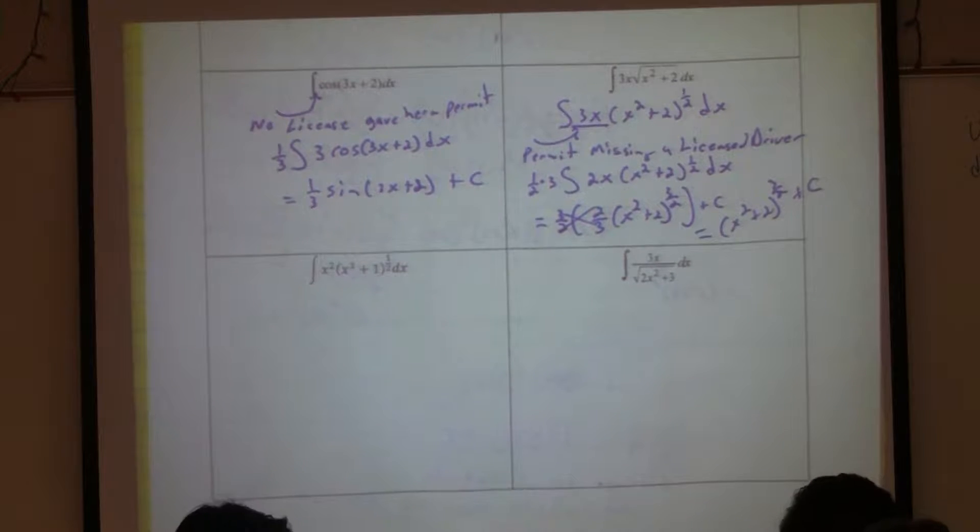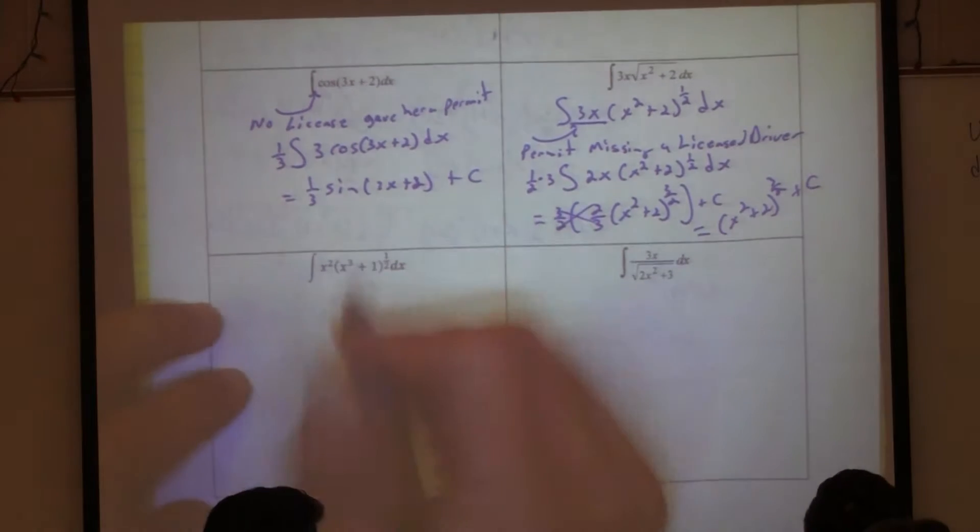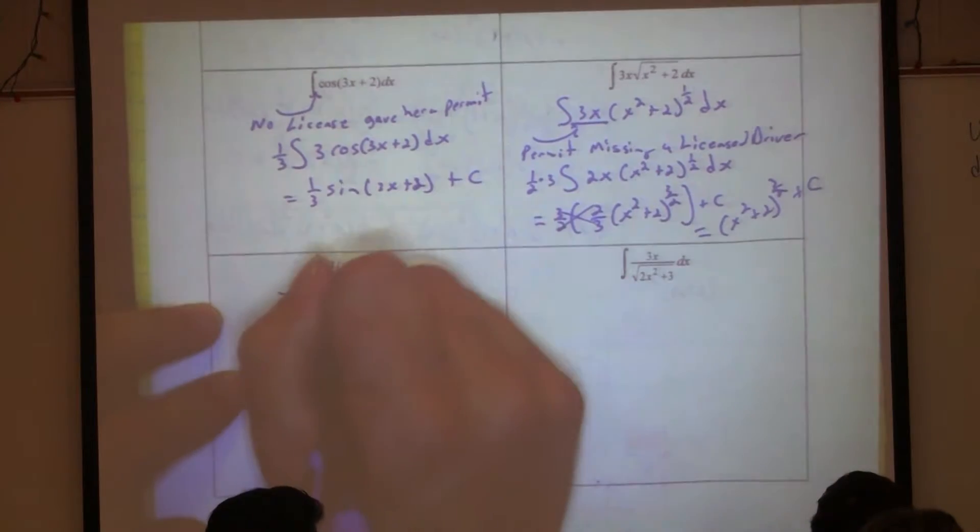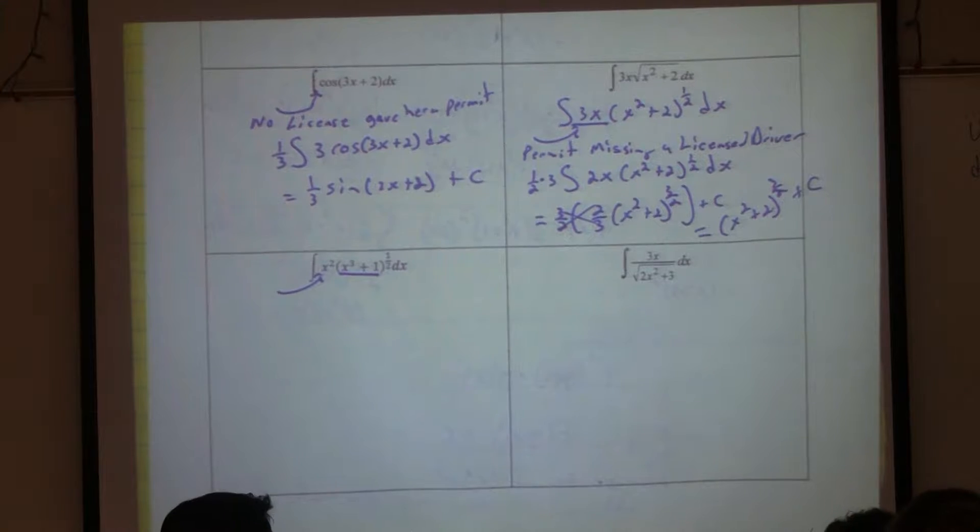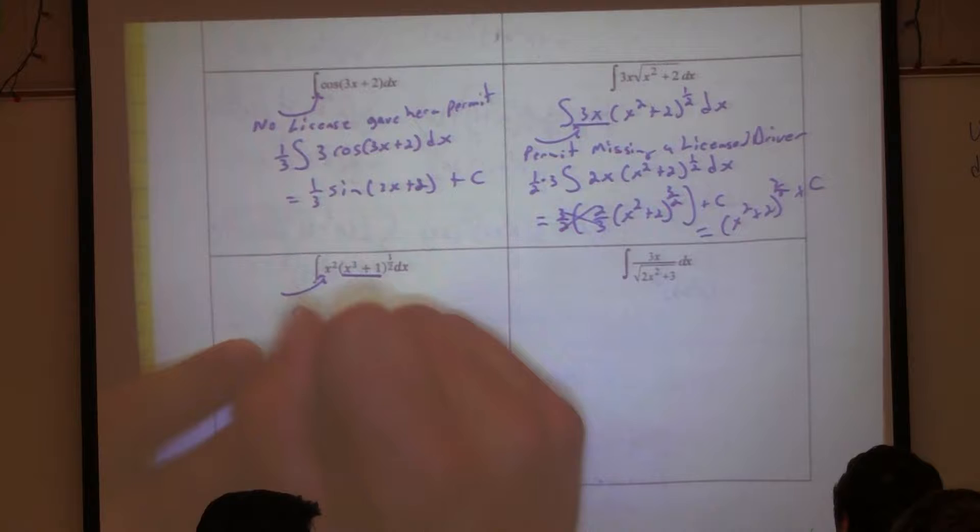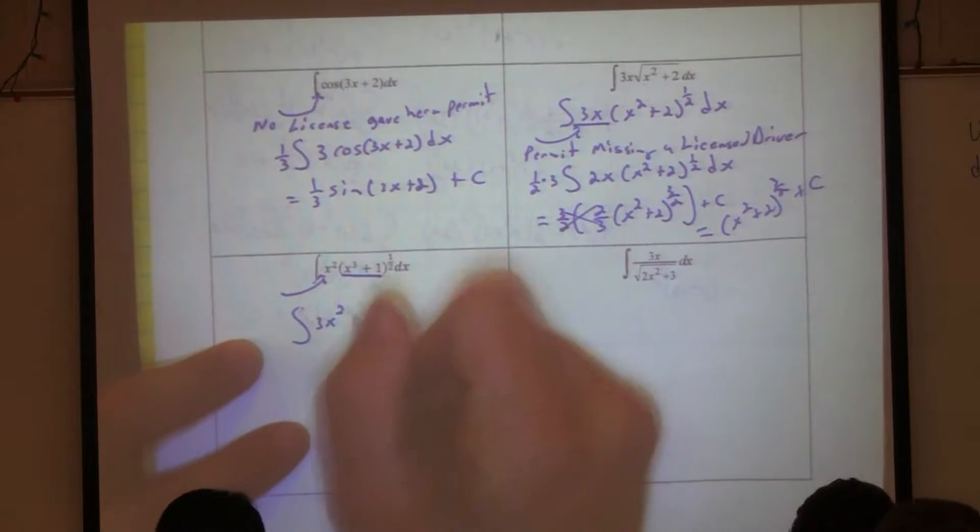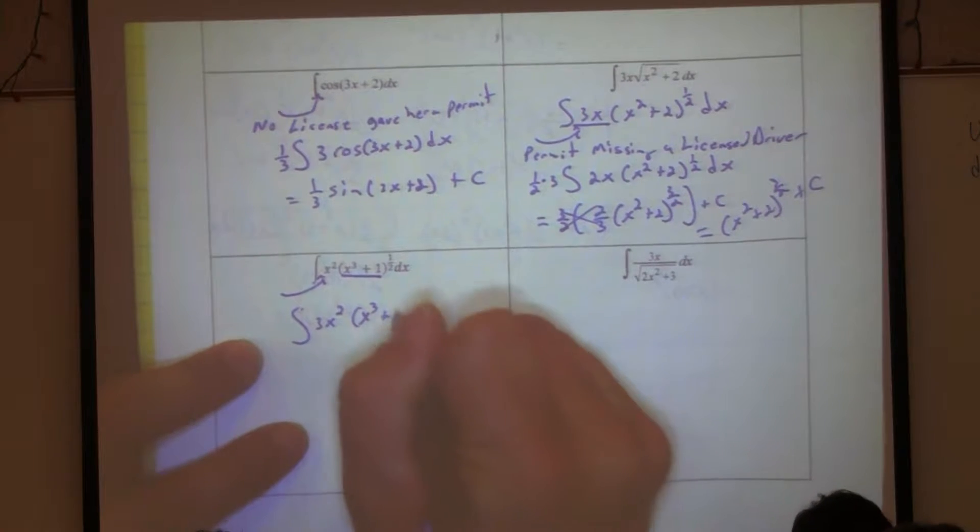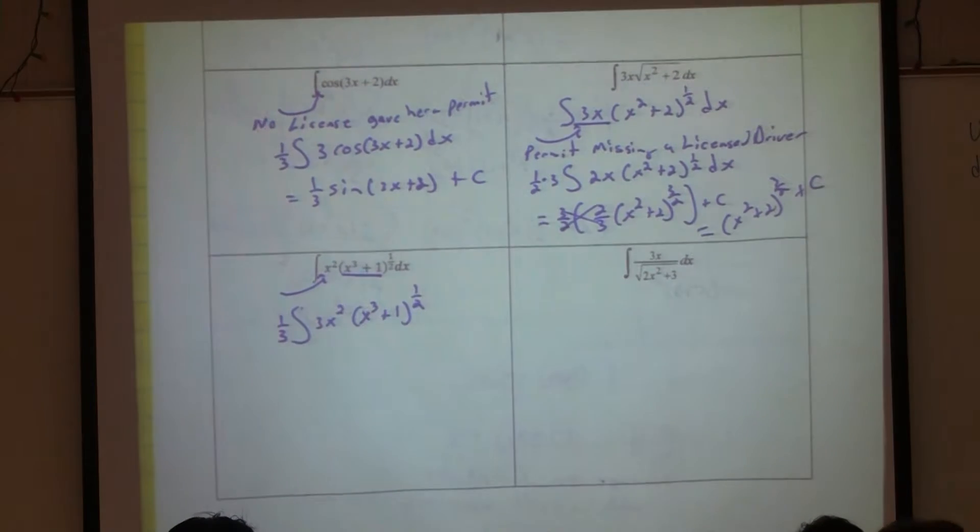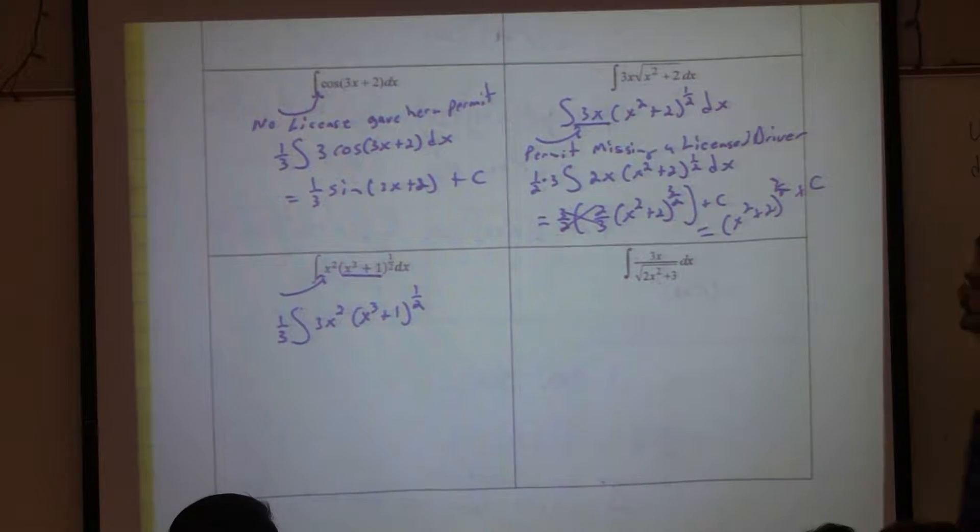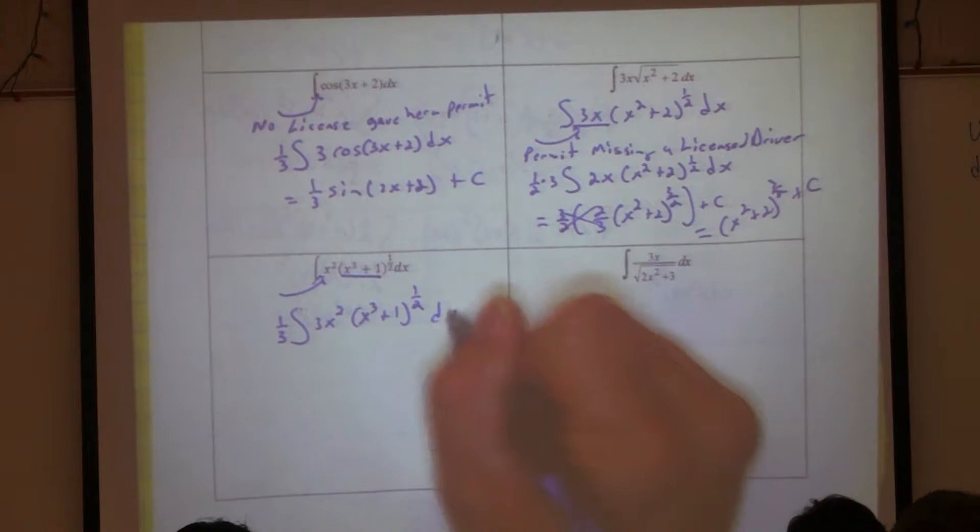Does this one have the license? Ah, otro compromet without the license driver. Okay? So the license should have been what? 3x squared. But I only have what? x squared. So we need to add a 3. Right? And if I add a 3 there, I need to put a 1 third on the outside to cancel it out. So technically I have the same problem. And now I fixed it so that it works out nice for me. Right?